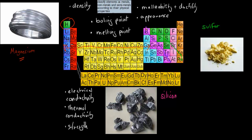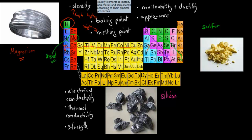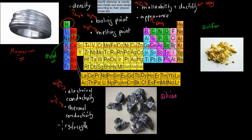Magnesium falls in the category of a metal. The way we know that is by looking at its properties: it has high density, a high boiling point, a high melting point, and a shiny appearance. It is also very malleable — we can make it into sheets — and very ductile, so we can make it into wire. It has high electrical conductivity, meaning it conducts electricity, and also high thermal conductivity. It is generally quite strong as well.